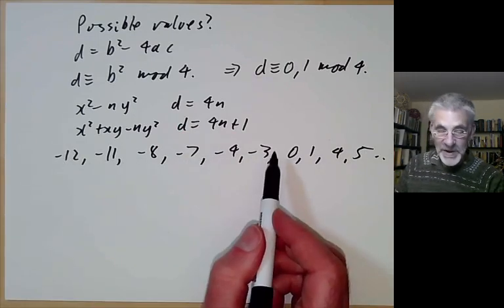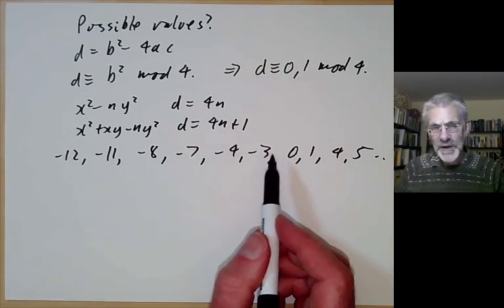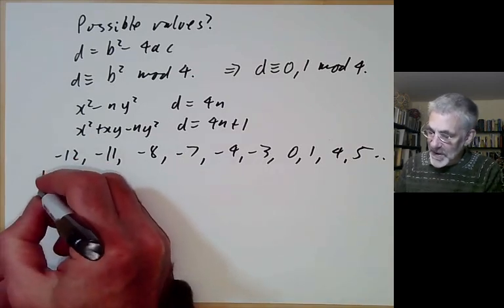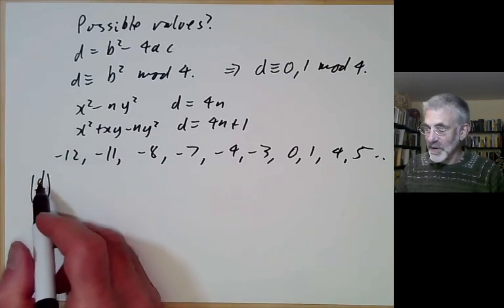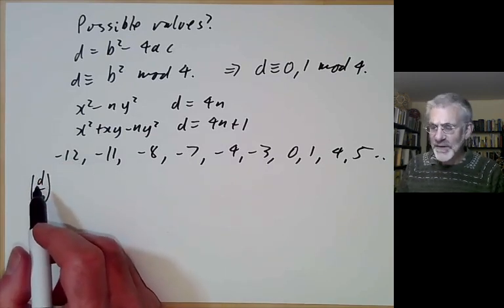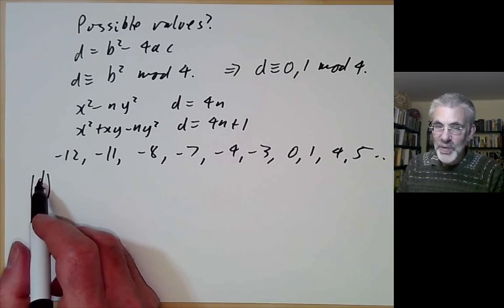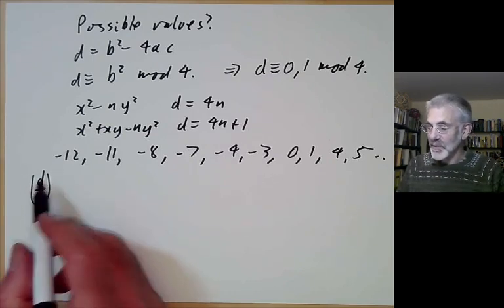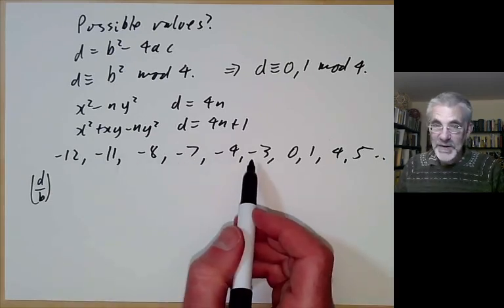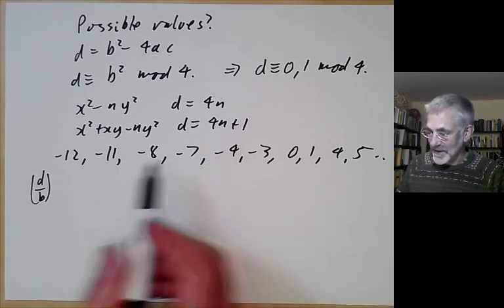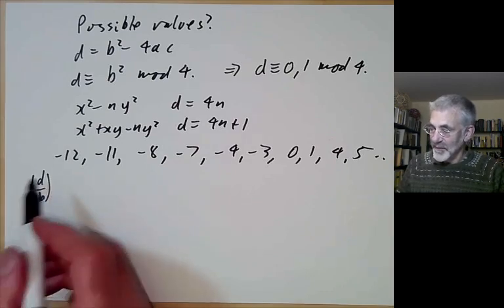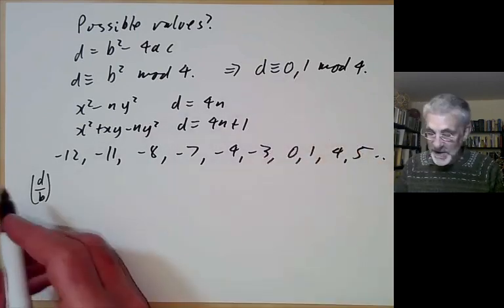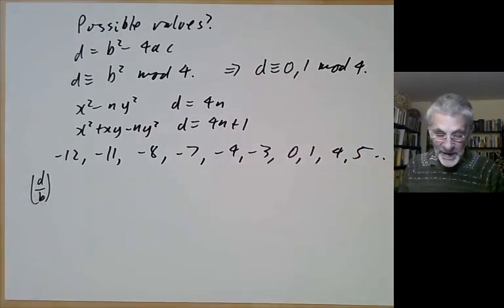These numbers also turn up when discussing the Kronecker symbol d over b. The Kronecker symbol behaves rather better when the numerator is 0 or 1 mod 4, and the numerator in the Kronecker symbol is very often taken to be the discriminant of some binary quadratic form. So it's very nice that binary quadratic forms always have discriminant satisfying this condition.